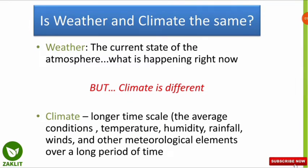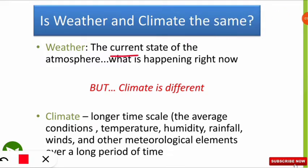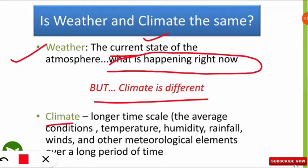Weather is the current state of the atmosphere — what is happening right now. At a particular place, we observe the weather pattern: rainfall, temperature. Whatever is happening at any place at the present moment, we call that the weather of that place.